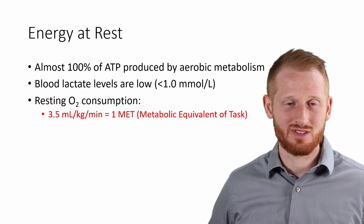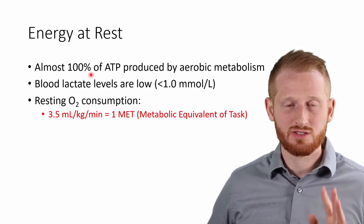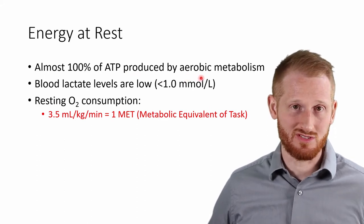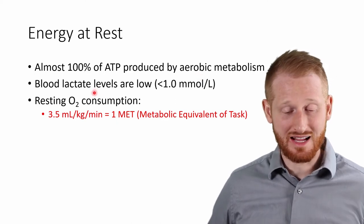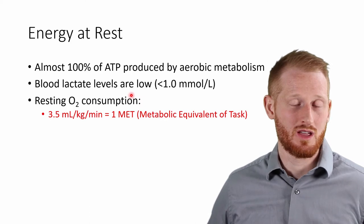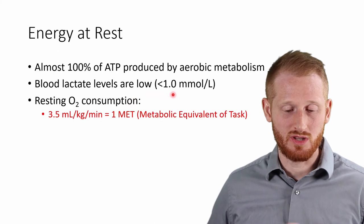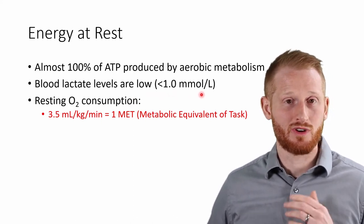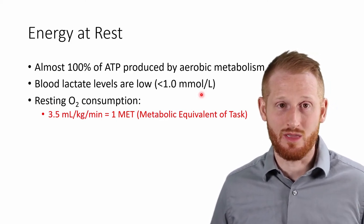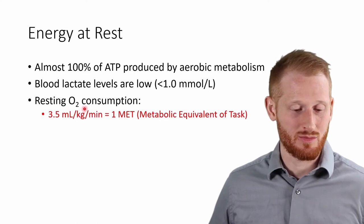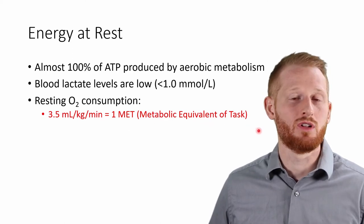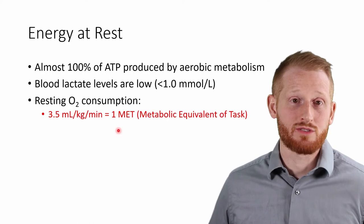We need to start off by talking about rest because we're going to be going from rest to exercise. At rest, almost 100% of our ATP, which is our unit of energy, is going to be produced using aerobic metabolism — very little anaerobic metabolism. Blood lactate levels are very low, less than one millimole per liter of blood. Our red blood cells do not have the ability to use aerobic metabolism, so there's always a little bit of lactate in the blood. At rest, oxygen consumption is 3.5 milliliters of oxygen per kilogram of body mass per minute, which equals one MET — one metabolic equivalent of task — a common unit for exercise prescription.